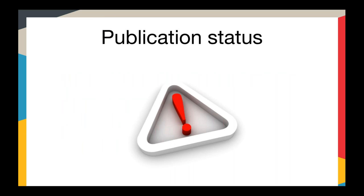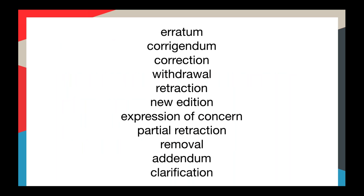The key purpose of Crossmark is to let the reader know if there have been any changes to the status of a particular publication. Many things can happen to content after it's been published - corrections, updates, retractions, even withdrawals. These things may happen shortly after publication, but they can also happen months or even years later. One of the main purposes of Crossmark is to provide a consistent and reliable way for readers to be notified of these important changes.